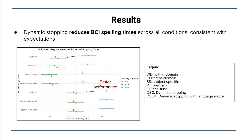After simulating BCI spelling with EEG data, we analyzed the within-subject changes in performance across the various conditions. We confirmed prior findings that show a dynamic stopping criterion significantly reduces spelling time while maintaining comparable accuracy.